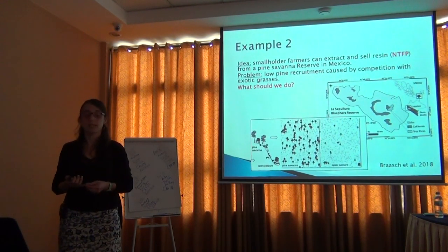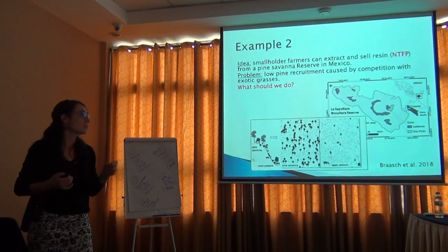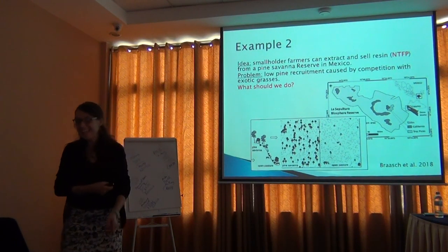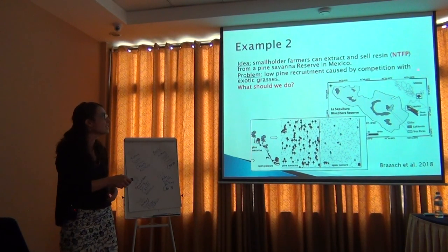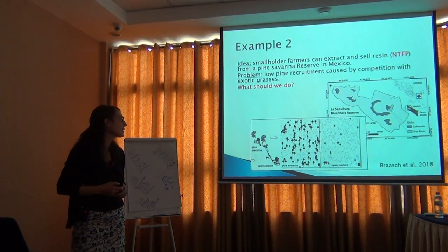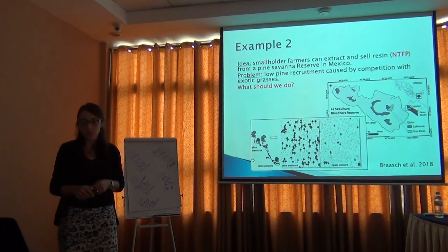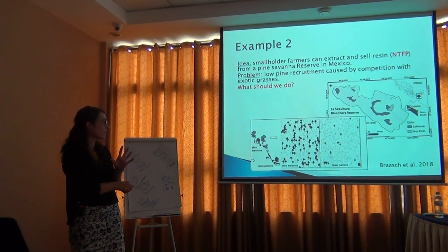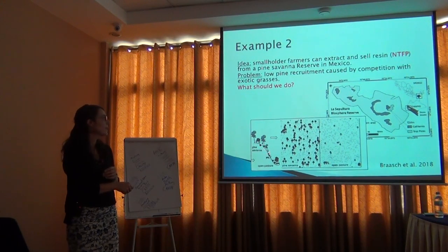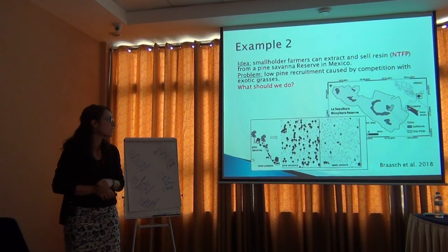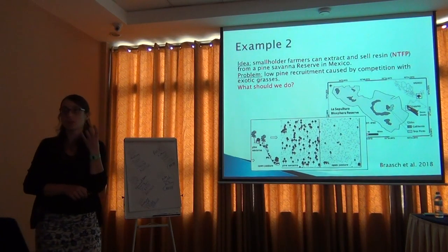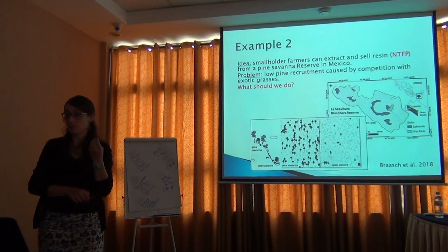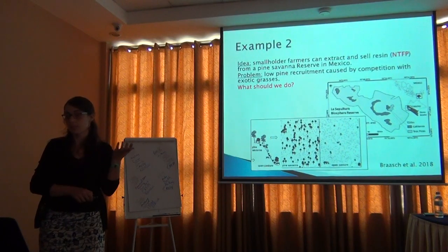The second example is from Mexico. This is a small reserve in southern Mexico with hills covered in pine savannah — a kind of dry, open forest. In the lower areas there are people with cattle. People also earn extra money collecting resin from pine trees, which is an important non-timber forest product. The problem is that these pines are not recruiting well.